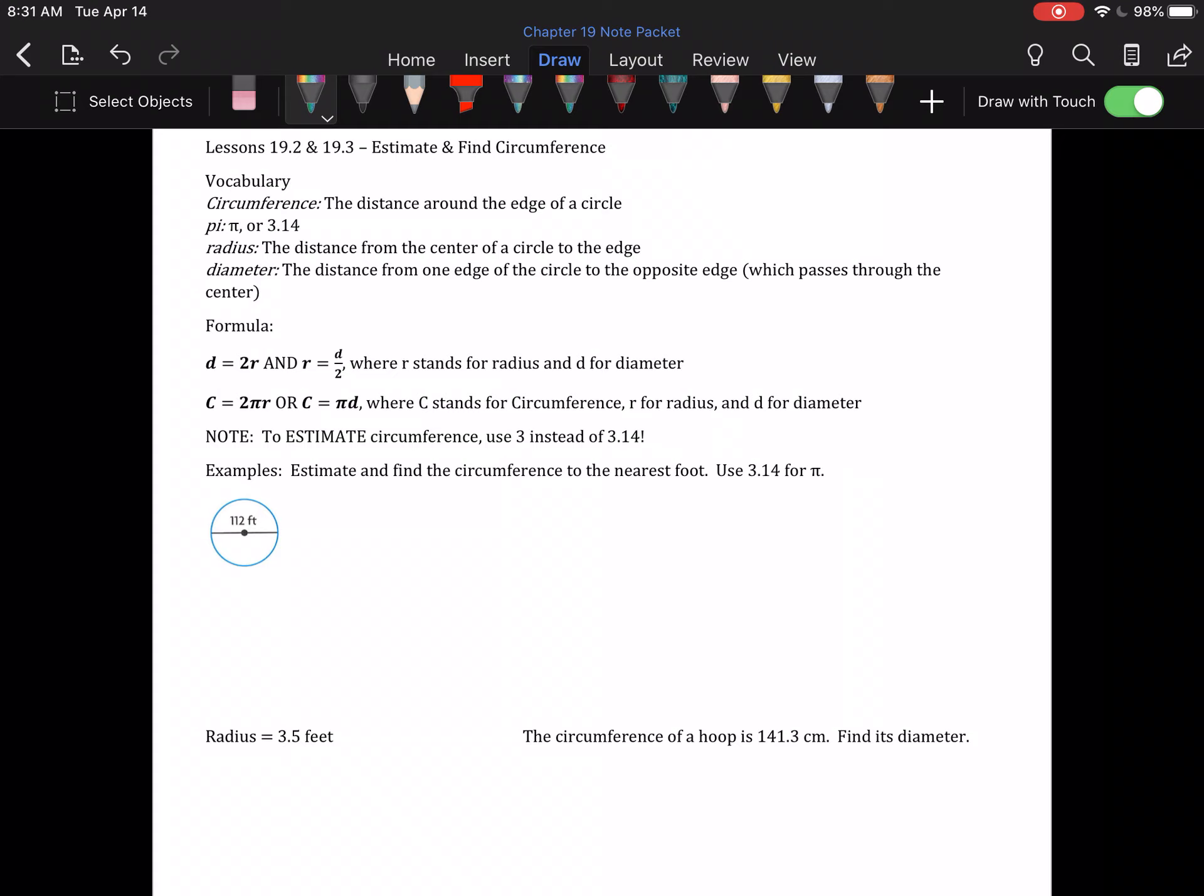Basically, depending on if you're given a diameter or a radius, that will tell you which formula you want to use. You will be asked to estimate circumference on the chapter test. To estimate, instead of using 3.14 for pi, we're just going to use 3. So for estimation, use 3. To find, use 3.14.